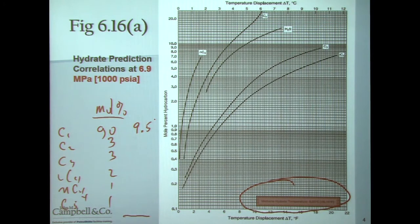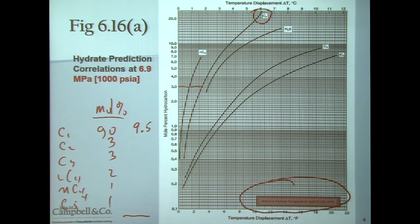Now we want to add the contribution of ethane. We have 3 mole percent ethane, so we find 3 mole percent on the chart and locate the ethane curve. We go in at 3 mole percent, we go up, and we read about 1.6 degrees Celsius. That's the contribution that ethane makes to the hydrate formation temperature.